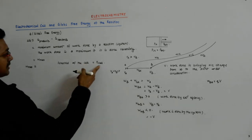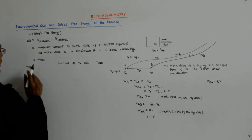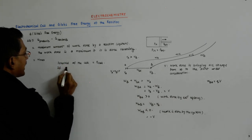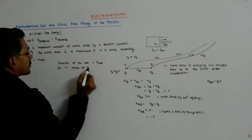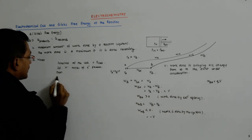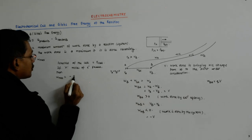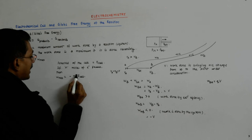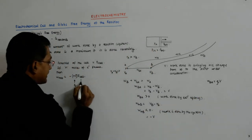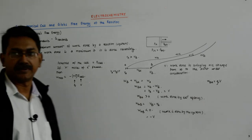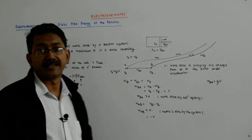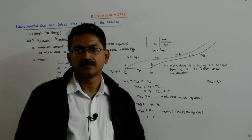With that, we know that the potential difference is E-cell, and if N moles of electrons pass, then W-max will be equal to minus N F E-cell. This is the amount of charge that has been passed, this is the potential difference across which it has happened, and since the work is being done by the system, I have put this as a negative quantity.